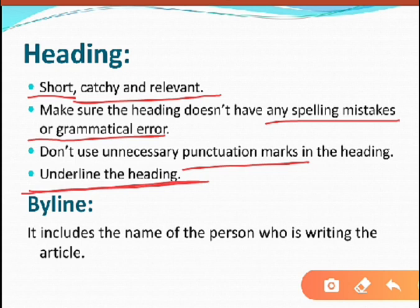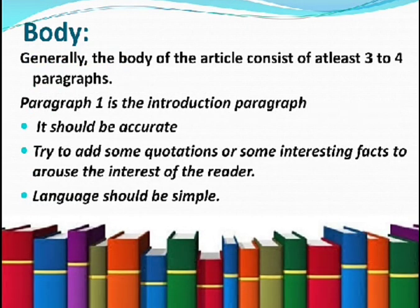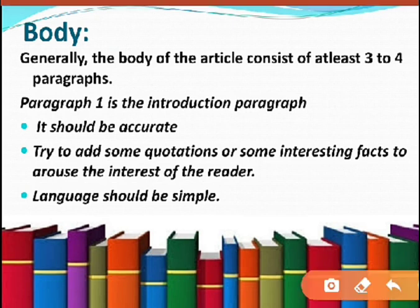Then comes the byline. It includes the name of the person who is writing the article. The name will generally be given in the question paper itself. Then comes the body, which is the main part of article writing and carries more weightage of marks. Generally the body consists of at least three to four paragraphs. Paragraph one is the introduction.